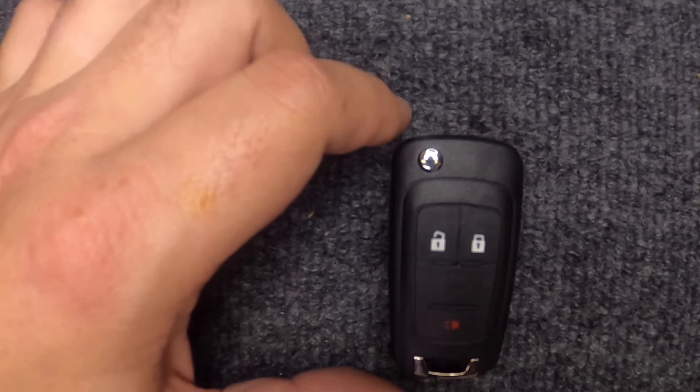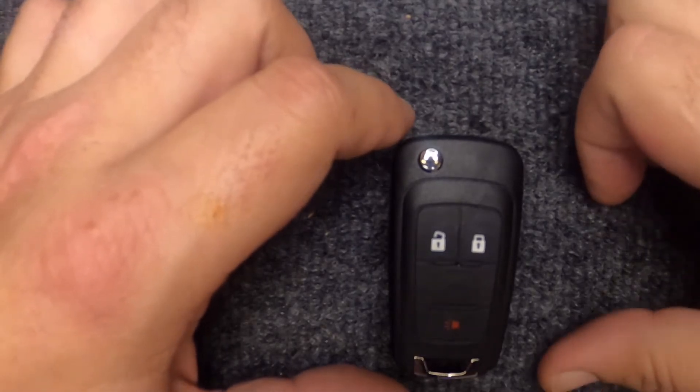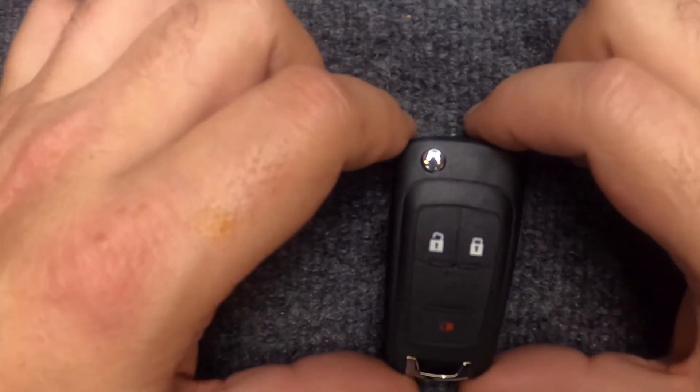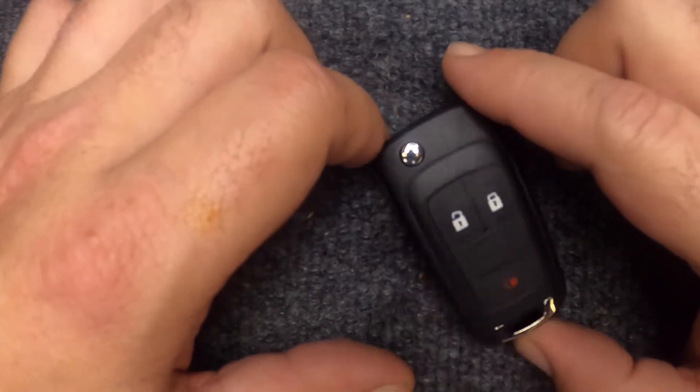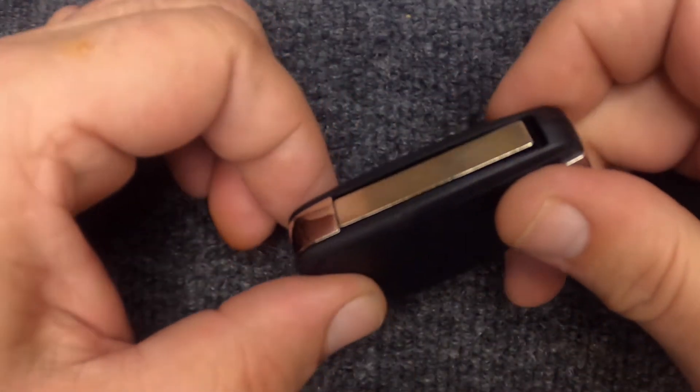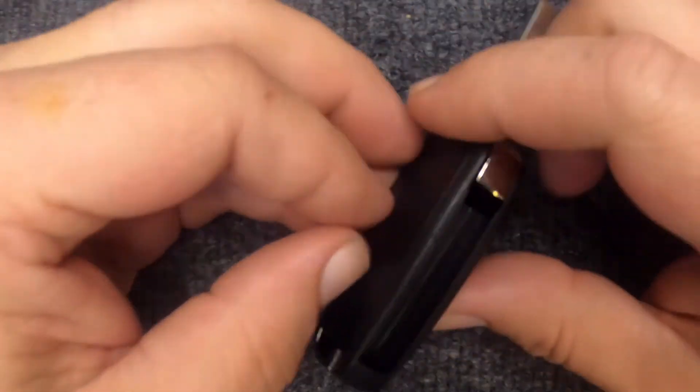Hey, it's Iron Locksmith here. We're going to do another battery change on your remote. This is for your three-button flip key remote. Let's go ahead and hit your release button.